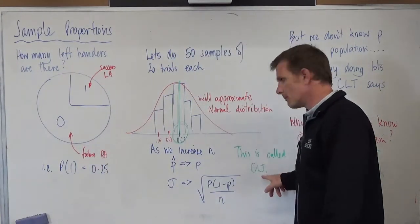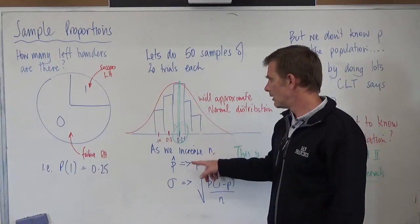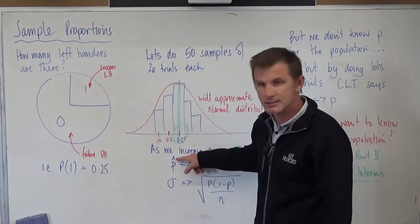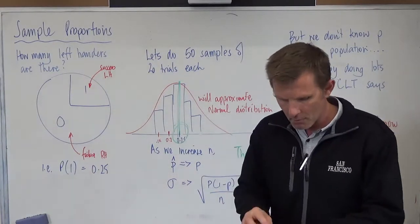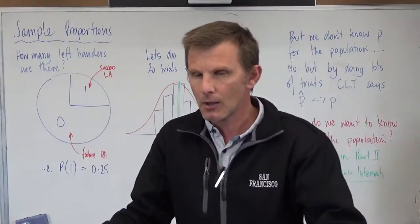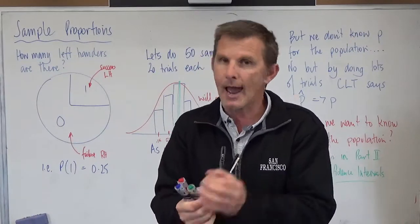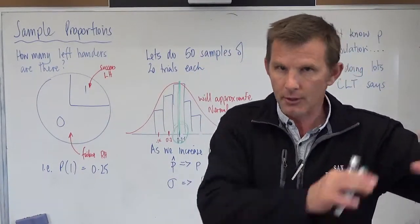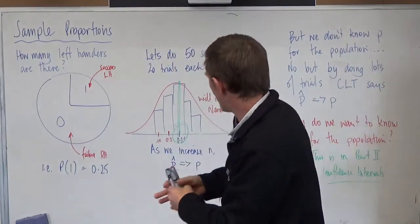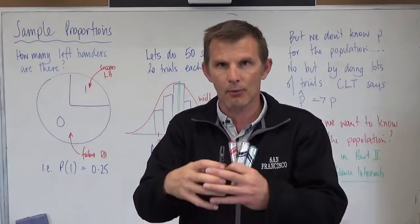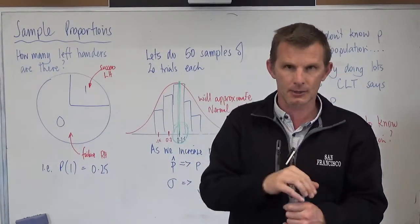Because of that, central limit theorem, CLT, says as we increase the number of samples that we do, the sample proportion, that's what the little hat is, the sample proportion will approximate or approach the population proportion. Now, that's really important, because what that means, I can go out and do all these surveys, and when I get them all back and collate those numbers, the mean of the sample proportions, I can use as my population proportion. I don't know the whole population, I can't sample it, it's too much, too hard, too expensive, but if I go and do some samples, based on this idea, I can then know that my sample proportions, the mean of my sample proportions, is a very, very, very good estimate of the population proportion.